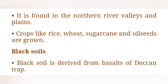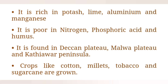Black soil is derived from the basalts of the Deccan trap. It is rich in potassium, lime, aluminium and magnesium, and poor in nitrogen, phosphorus and humus. Found in the Deccan Plateau, Malwa Plateau and Kathiawar Peninsula. Crops like cotton, millets, tobacco and sugarcane are grown.